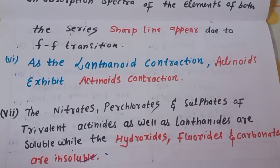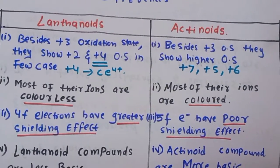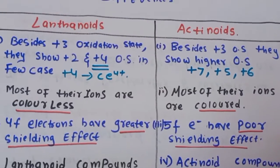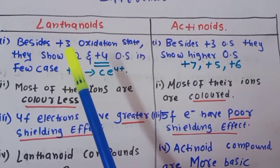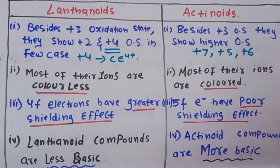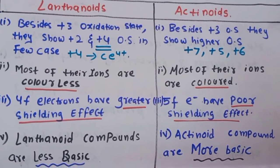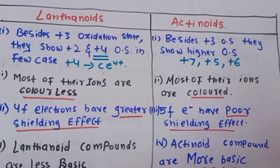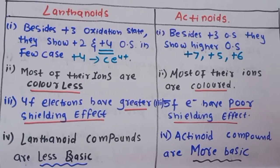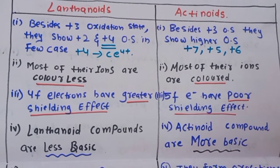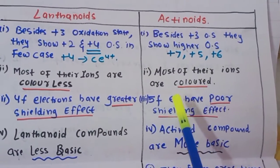Now let us look at the differences. First difference: while the +3 oxidation state is common to both, lanthanides also show higher oxidation states such as +4 (e.g., cerium), and actinides show even higher oxidation states like +5, +6, and +7. Second difference: lanthanide ions are colorless, whereas actinide ions are colored.